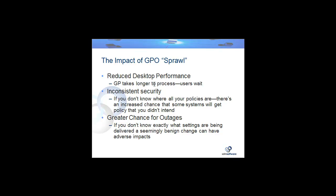And finally, there's a greater chance for outages. As you've probably experienced, it is possible to make group policy changes that can cause outages to your users on the desktop or on servers. Knowing exactly what's in place is a key part of preventing outages as a result of group policy objects. If you make a change to a GPO or a security filter, the last thing you want is for that to cause an outage to your servers.